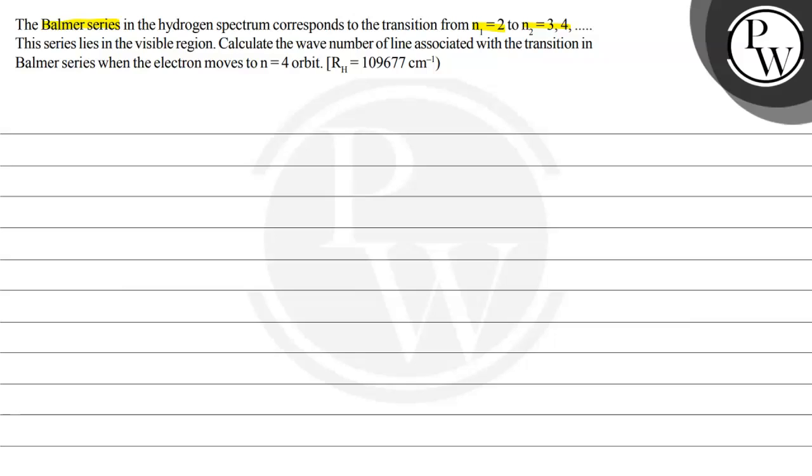Calculate the wave number of the line associated with the transition in the Balmer series when the electron moves to n equals 4 orbit. Here, Rydberg constant is given as 109,677 centimeter inverse.